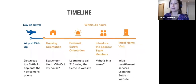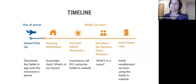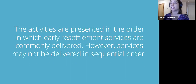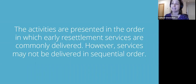The cultural orientation toolkit begins with a timeline listing 25 early resettlement services, the timeframe to complete each service, and the corresponding cultural orientation activity. In the toolkit, activities are presented in the order early resettlement services are commonly delivered. However, services may not be delivered in sequential order — if that's the case, skip to the appropriate cultural orientation activity that aligns with your service delivery. You can find more important tips in the first seven pages of the toolkit, so make sure you read the introduction.